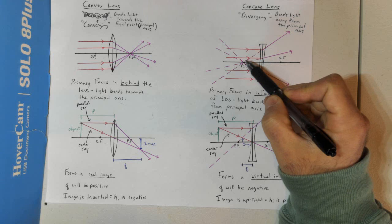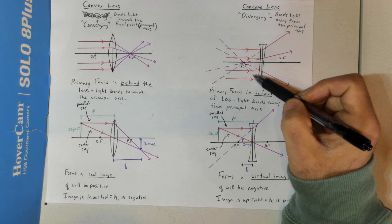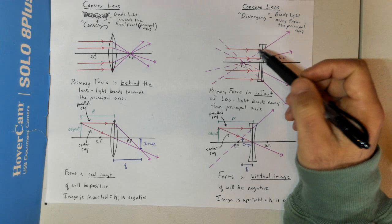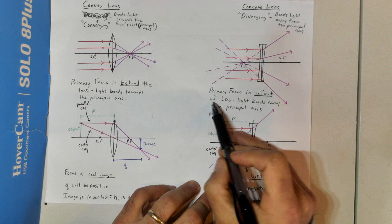Since the rays diverge and don't intersect, we trace back these virtual lines. Because there are no actual light rays reflecting back, these are not real rays. But if we draw these virtual rays, we see that there is an intersection — and this intersection is our primary focus. For a concave lens, the primary focus is in front of the lens.